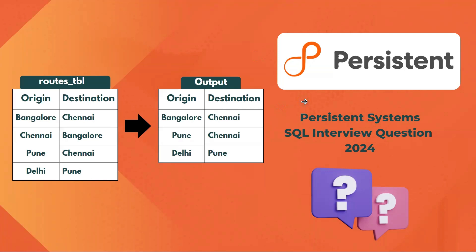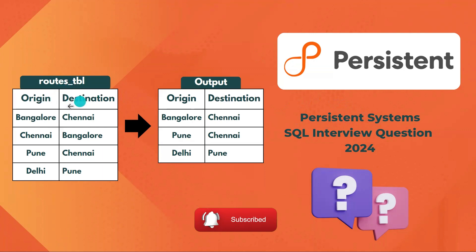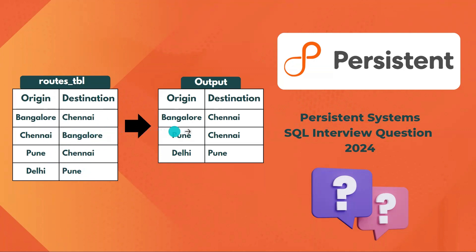Hello everyone, welcome back to the channel. In this video I will be covering one of the SQL interview questions that was recently asked in a Persistent Systems interview. Given a routes table, we have origin and destination columns with records: Bangalore-Chennai, Chennai-Bangalore, Pune-Chennai, Delhi-Pune. From this input table we need to get the distinct combination values.